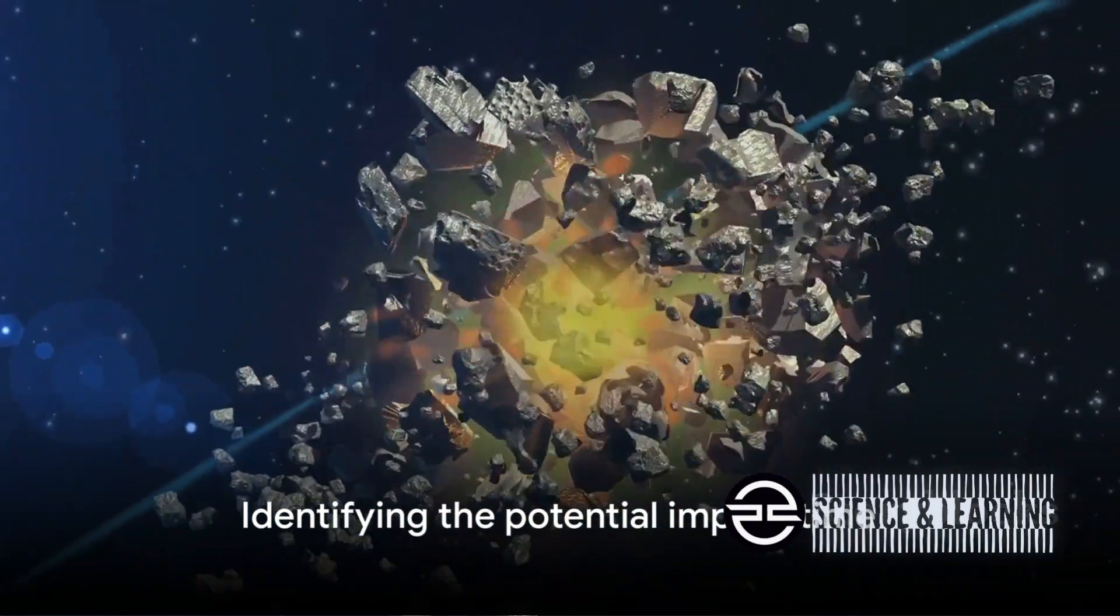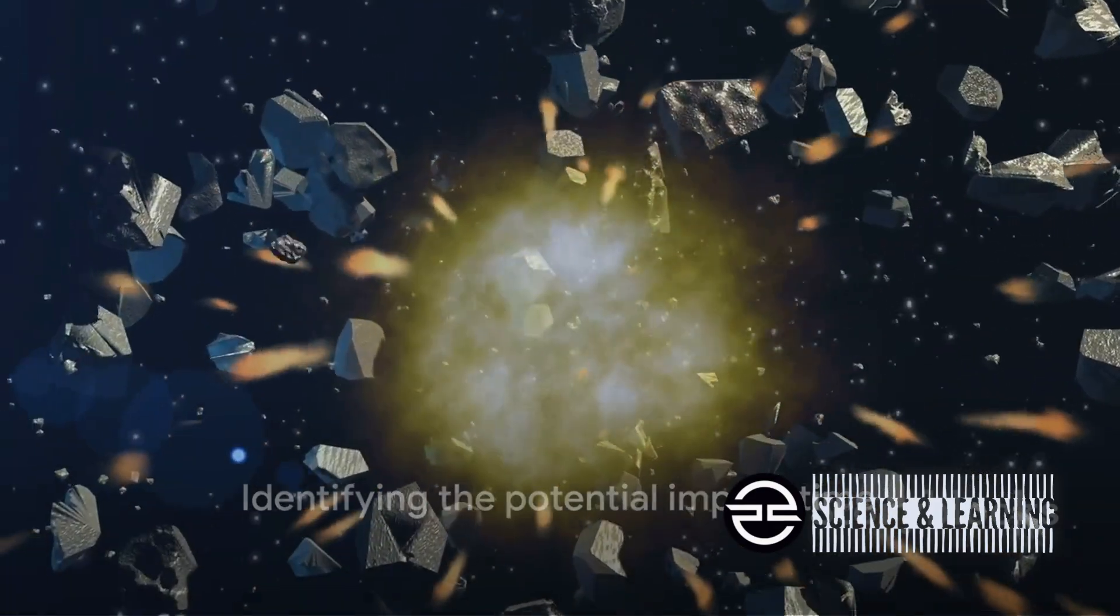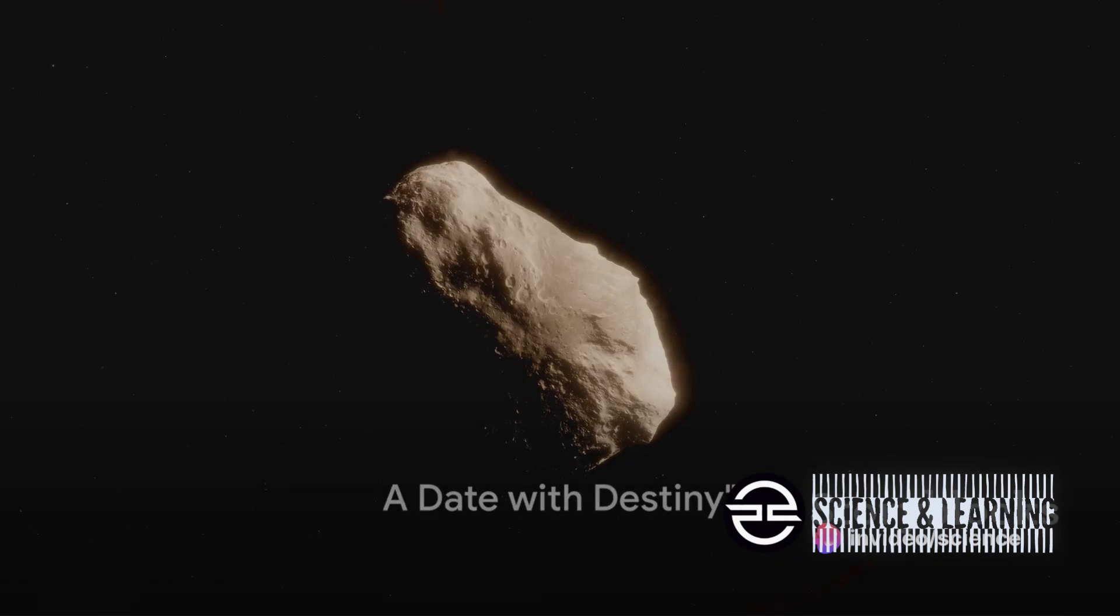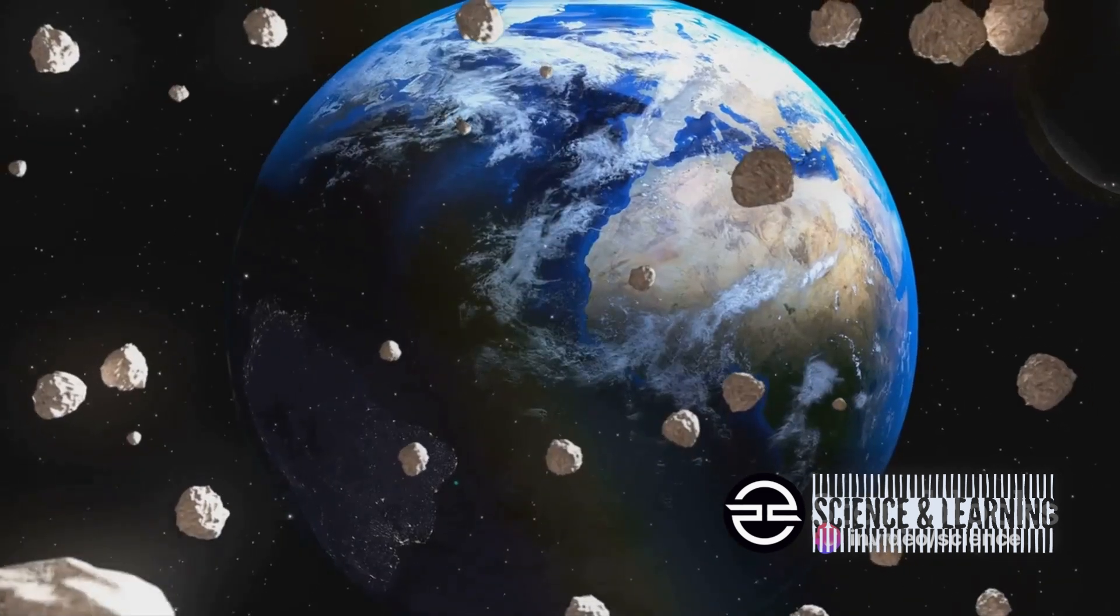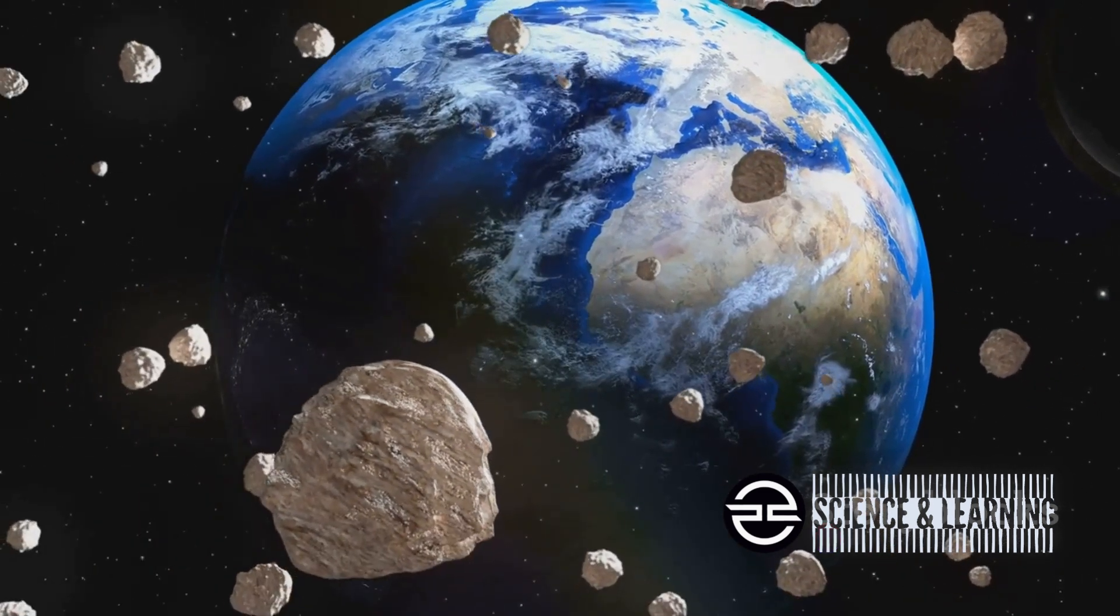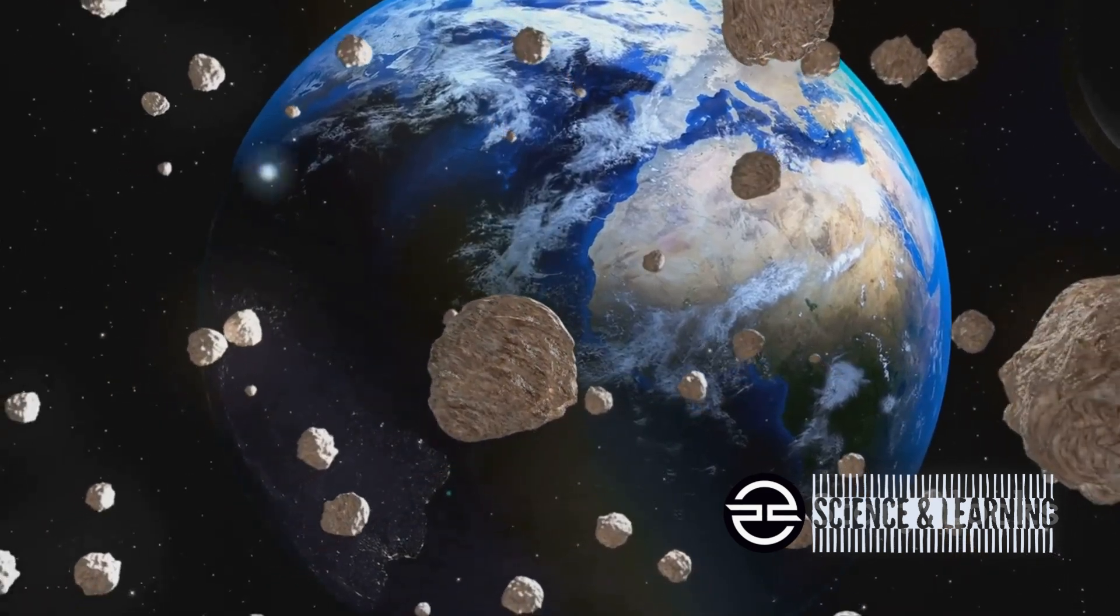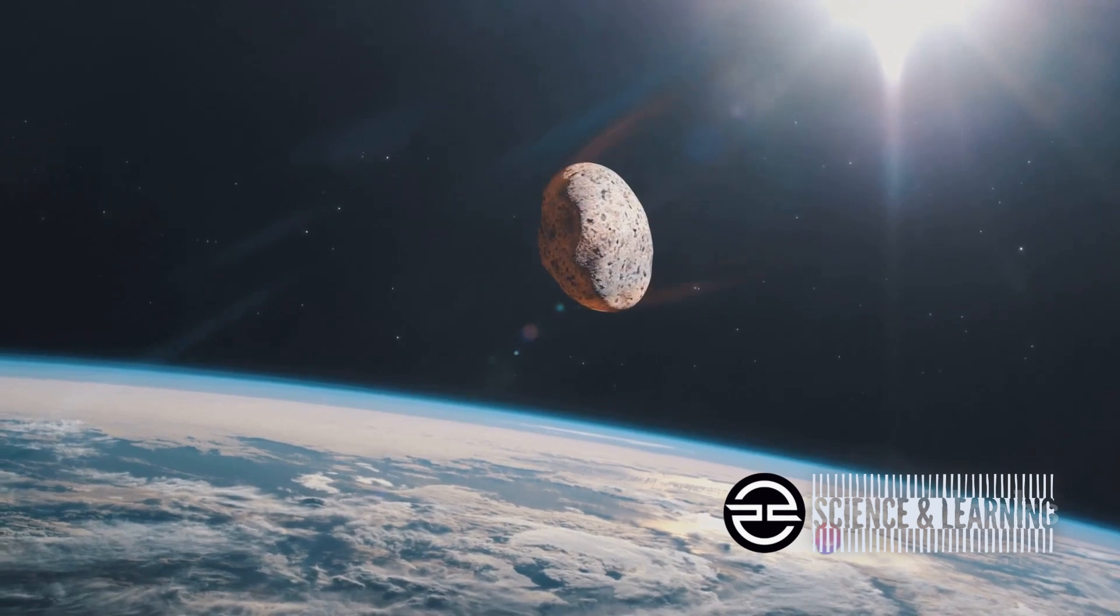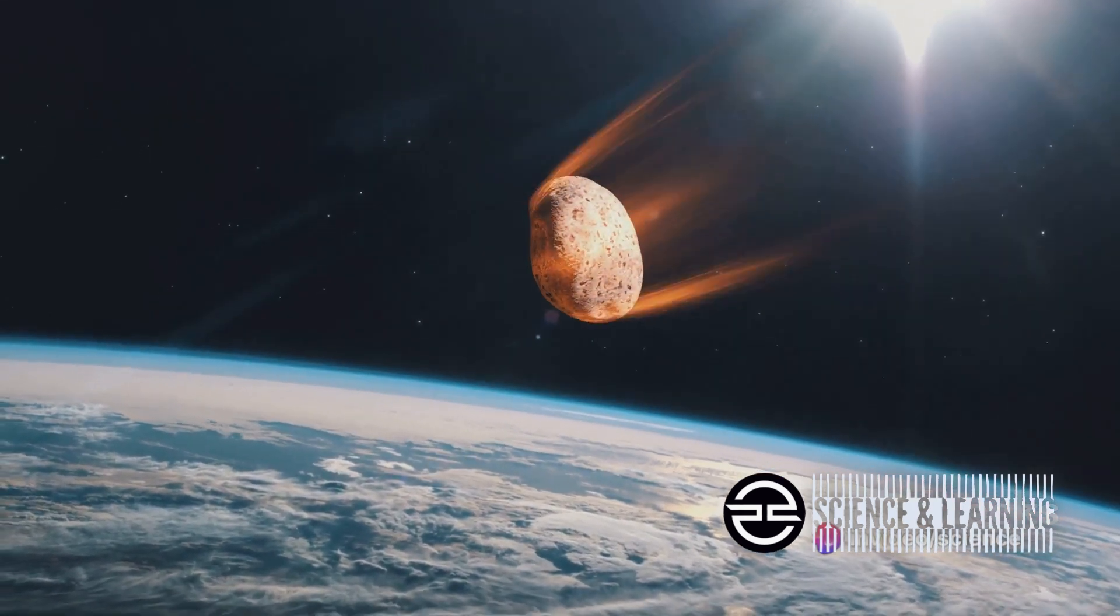So we've identified a potential threat. But when could this cosmic bullet hit us? In space, everything moves in predictable patterns, and Bennu is no exception. This cosmic traveller is currently in an orbit around the Sun that brings it close to Earth every six years. But due to the gravitational nudges from our planet, the asteroid's orbit is gradually shifting.